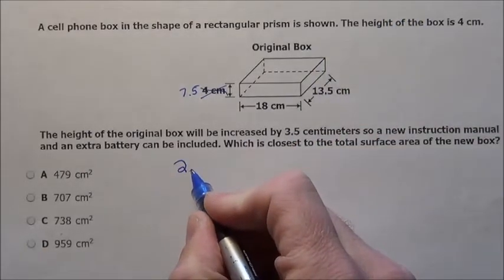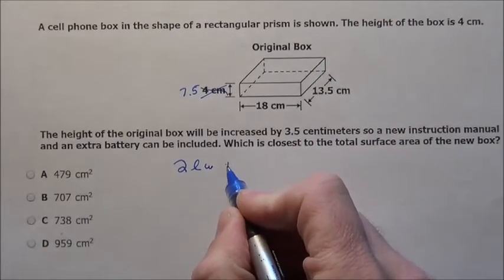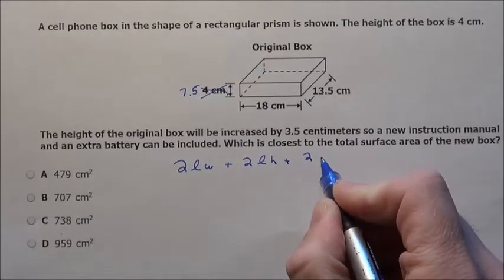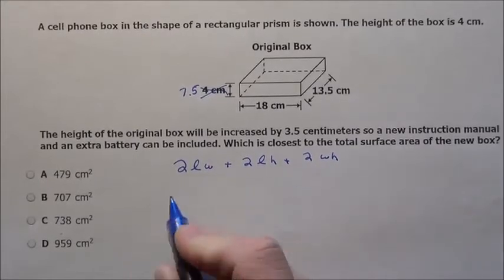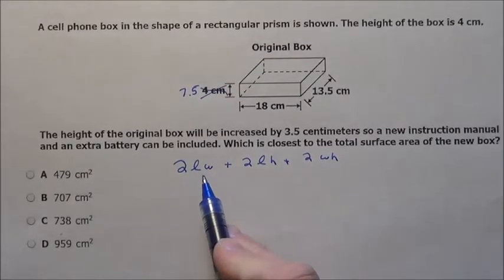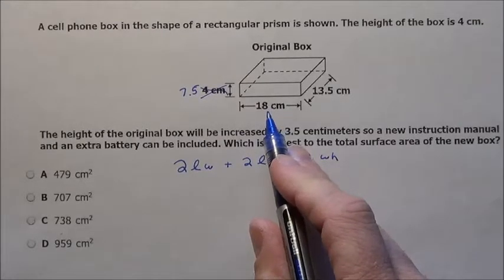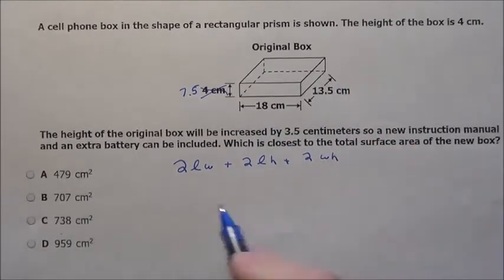Your formula simply says do 2 times your length times your width plus 2 your length times your height plus 2 times your width times your height. You plug in the numbers 7.5 for the height then the length being if you want that to be 18 and then the width to be 13.5.